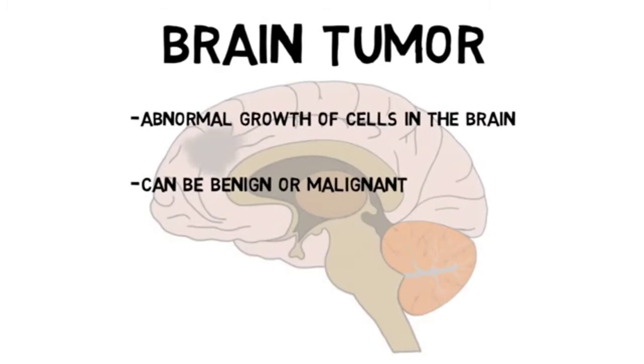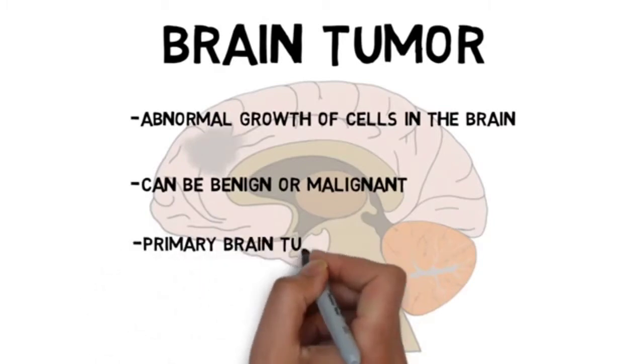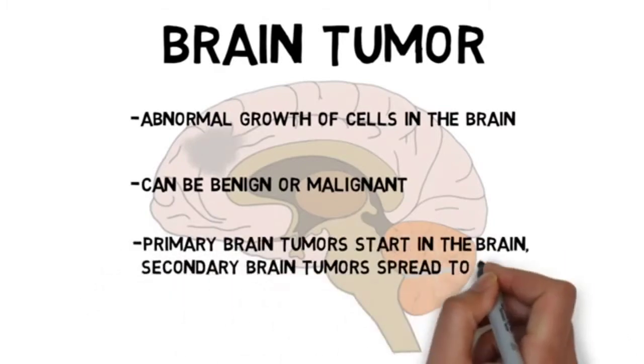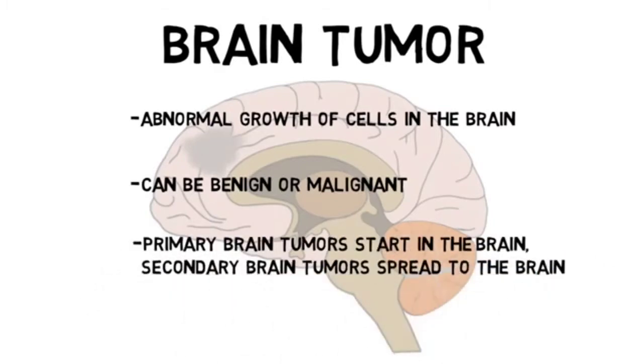If a brain tumor begins in the brain, it's called a primary brain tumor. If it spreads to the brain from some other location, it's known as a secondary brain tumor.